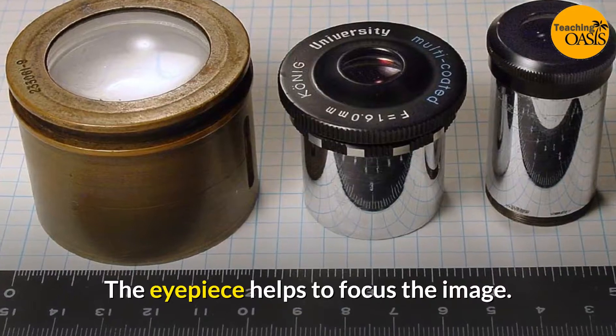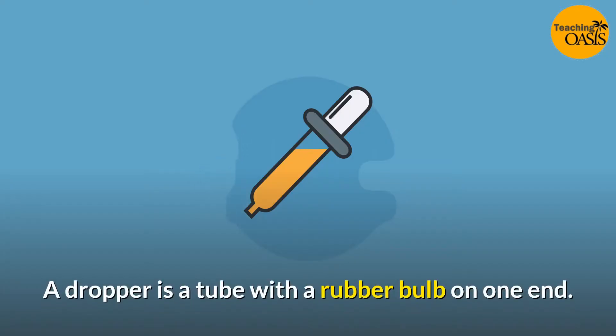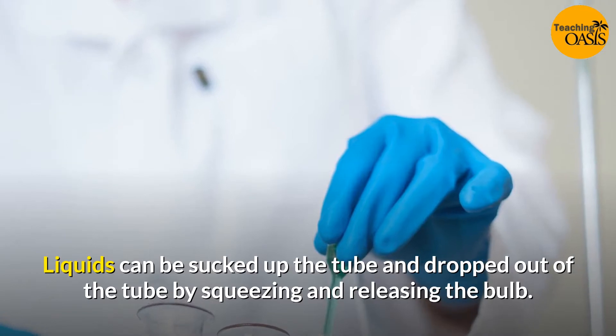Dropper: A dropper is a tube with a rubber bulb on one end. Liquids can be sucked up the tube and dropped out of the tube by squeezing and releasing the bulb.